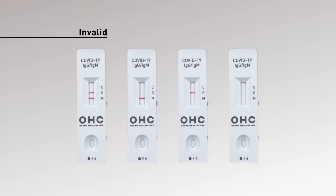If the control line is partially red and fails to completely appear in the control line region, insufficient specimen volume or incorrect procedure techniques are the most likely reason for control line failure. Review the procedure and repeat the test with a new test cassette. If the problem persists, discontinue using the test cassette immediately and contact your local distributor.